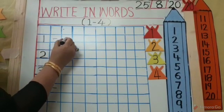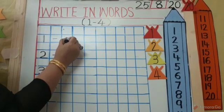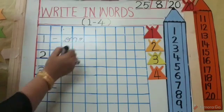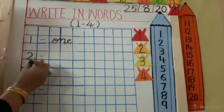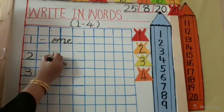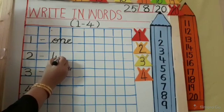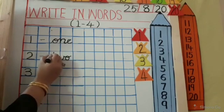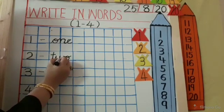Okay. O-N-E. One. Touch the line down. Two. T-W-O. Two. T-W-O. Two.